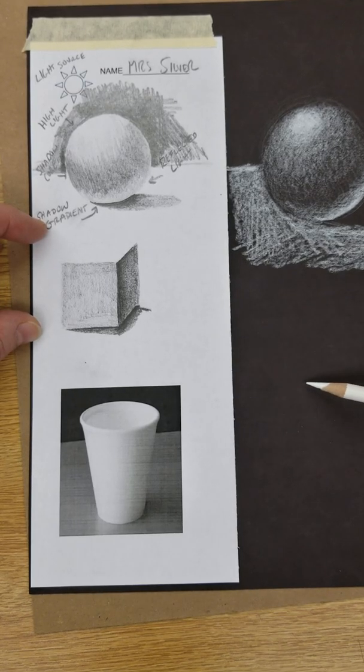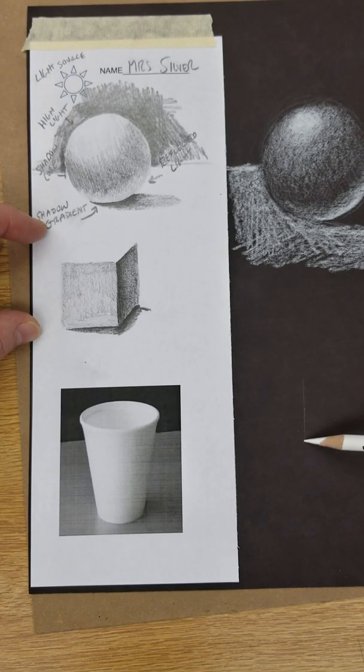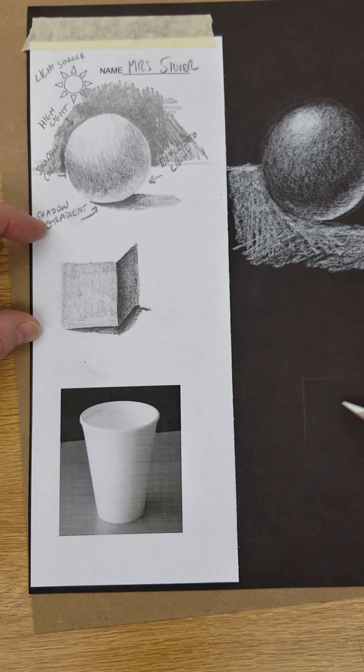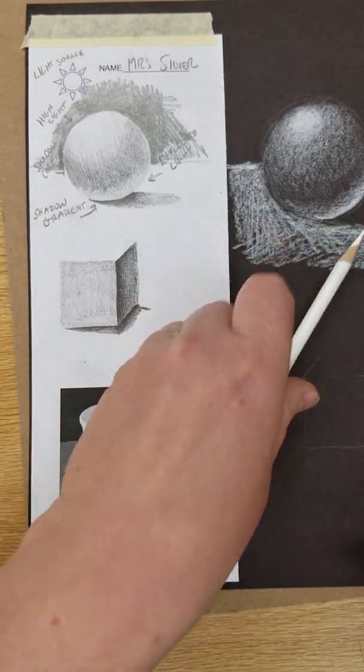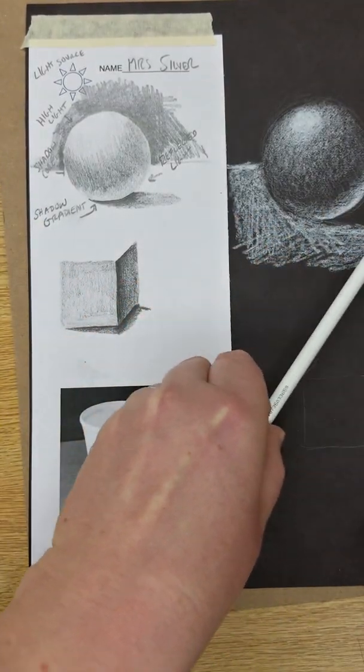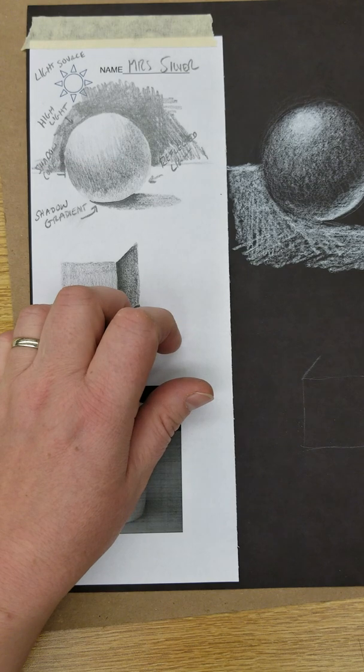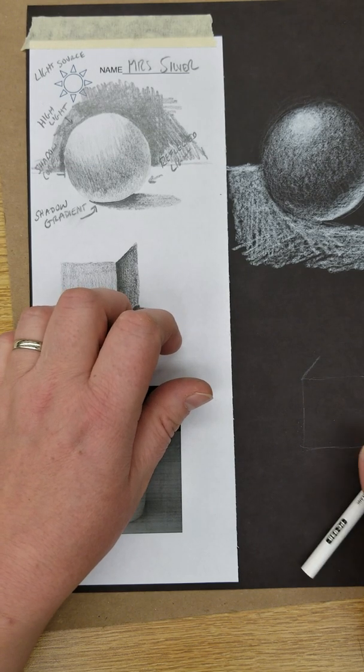So to start off with, I'm going to start by just drawing an extremely light line for the front of the cube, and it's just a square. And then the idea behind this, we can talk about linear perspective later on, but I'm just drawing two parallel lines. So in other words, this line and this line are the same angle, and then there's going to be a third line that's also the same angle.